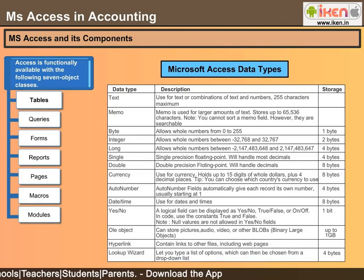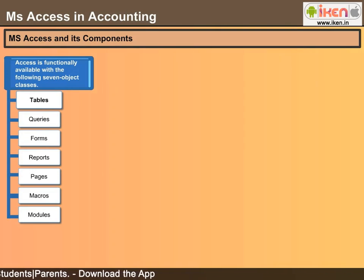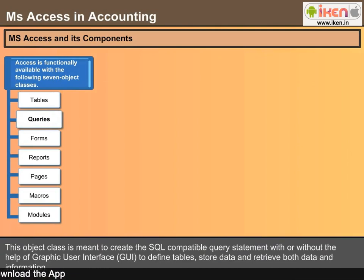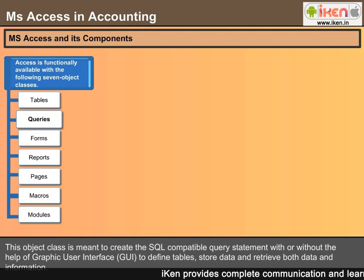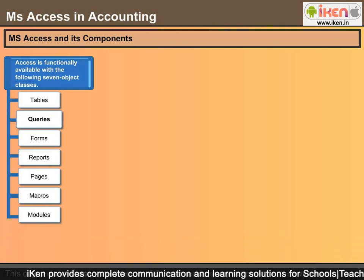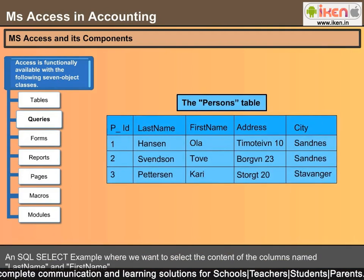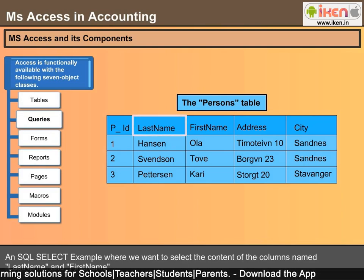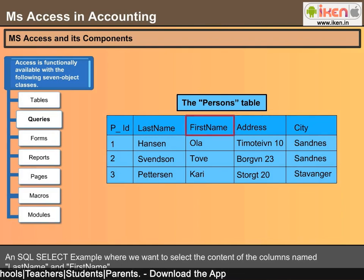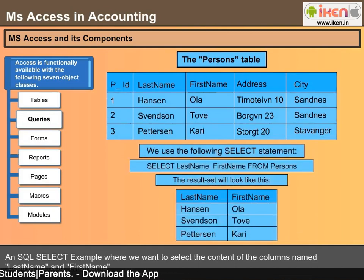Queries: This object class is meant to create SQL-compatible query statements, with or without the help of a graphical user interface (GUI), to define tables, store data, and retrieve both data and information. Here is an SQL SELECT example where we want to select the content of the columns Last Name and First Name from the table. We use a SELECT statement and the result set will look like this.